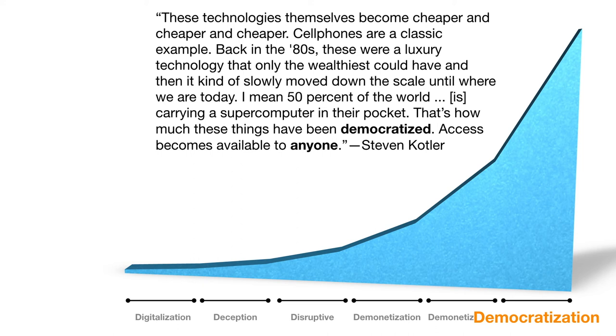Those are the six D's of exponential technologies. They provide a good model for understanding how sometimes it takes quite a while — from the time a technology is originally invented or becomes digitized — to where it really becomes fully democratized. In the next video, we're going to look at some of the drivers of exponential growth: why things grow exponentially, especially when it comes to technology, and why they're probably going to continue to do so for quite some time. Click to watch that next video, which is part of this mini series on understanding technology.